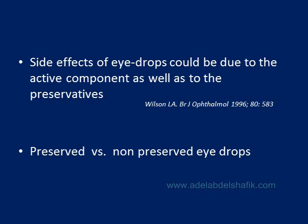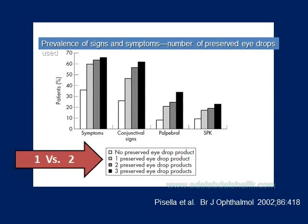That is why we now have preservative-free eye drops and why it is better to use a combination of two drugs in one bottle. In one study, symptoms and signs were compared between preservative-containing and preservative-free drops, with one, two, or three products. Problems were highest when using three bottles with preservatives and least with no preservatives — across conjunctival, palpebral, and corneal signs.